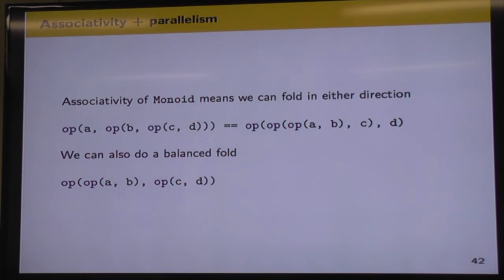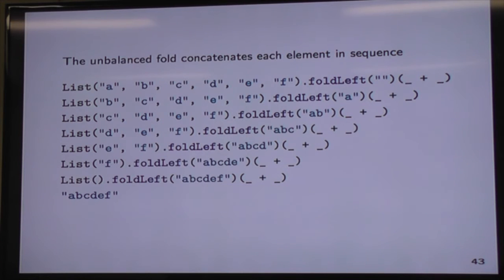Parallelism. So we've just seen how we can fold from the left to the right with our monoid and we get the same result. We can also do a balanced fold. So we can split our workload or our list of operations in half and deal with half of our list on one side, half on the other. And this has some nice benefits.